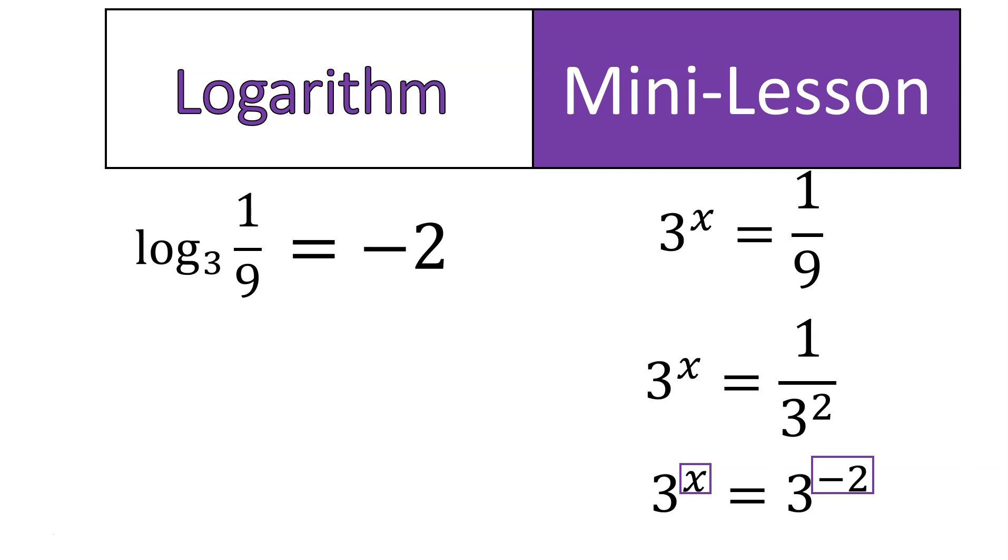So the solution for this logarithm is negative 2. In other words, 3 to the power of negative 2 is equal to 1 over 9. If you've never worked with negative exponents before, this one here might be a little bit over your head, but if you have and you've balanced equations using negative exponents, this one might seem pretty straightforward.